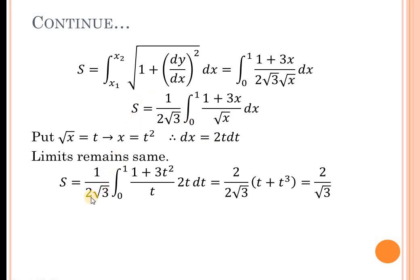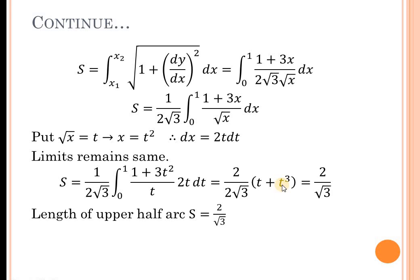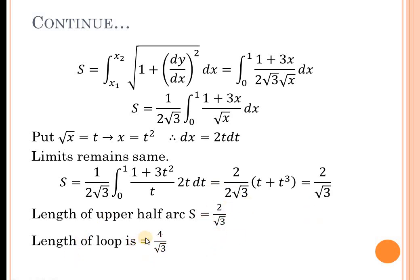After substitution, the integration becomes (1/(2√3)) times the integral from 0 to 1 of (1 + 3t²)/t · 2t dt, which simplifies to integrating (1 + 3t²). The integral of 1 is t and the integral of 3t² is t³. When I substitute the limits 0 to 1, I get 1 plus 1 equals 2, divided by √3. So the length of the upper half is 2/√3. For the total length of the loop, by symmetry the total length is 4/√3.